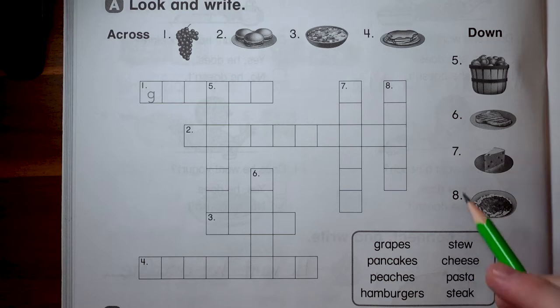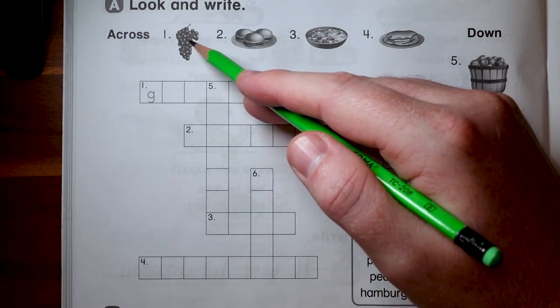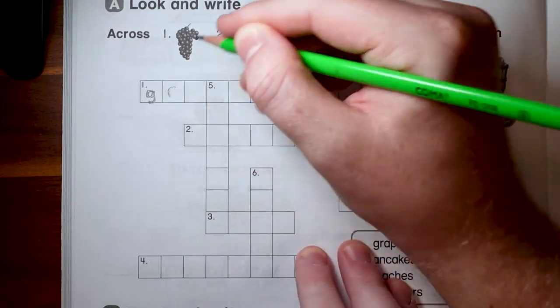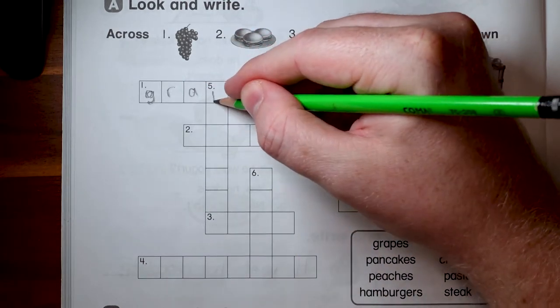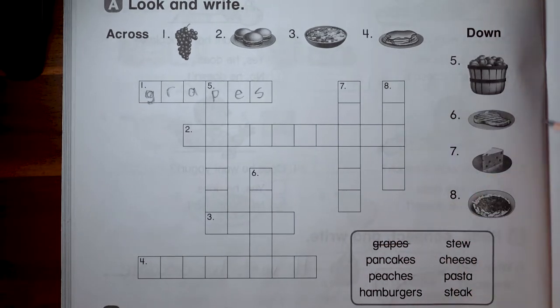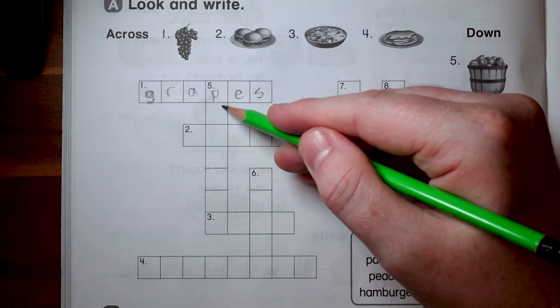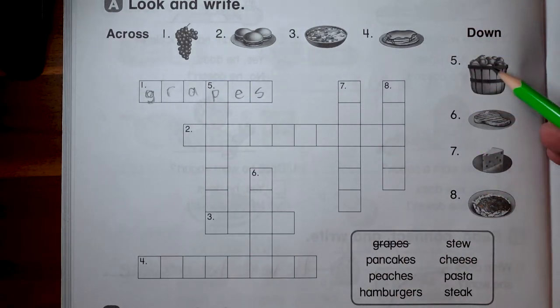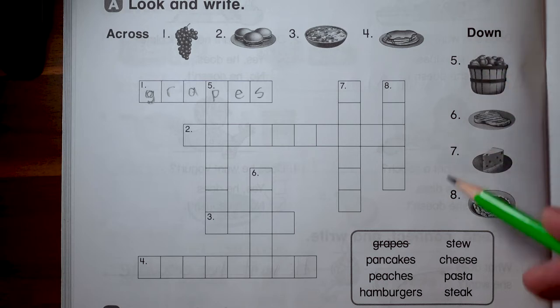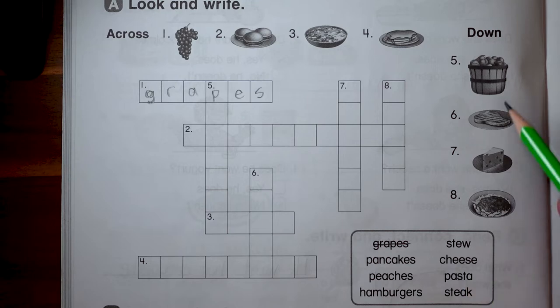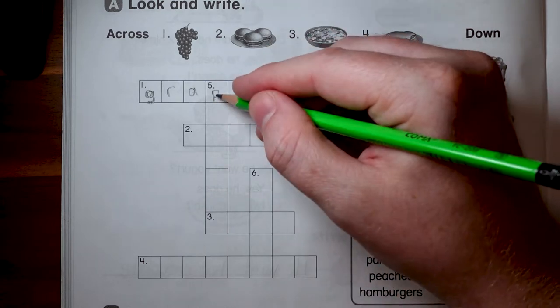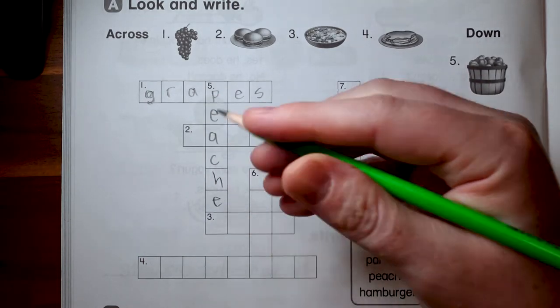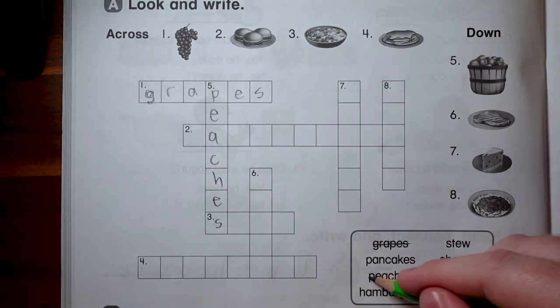Okay, let's start. Number one, I've already got a G and I know that these are grapes. Here's grapes spelling. Let's write grapes. G-R-A-P-E-S. Grapes are done. Now we can do number five because we've already got a P.